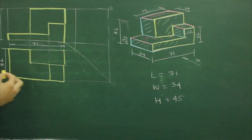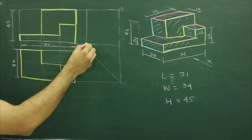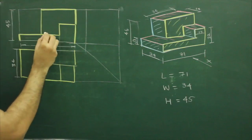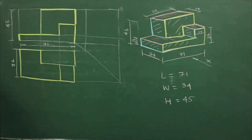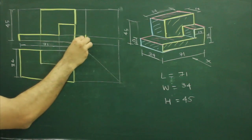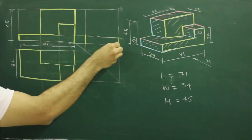so we can take, 34 is already there. For this height, 13 we can project from front view. So we will get this block.